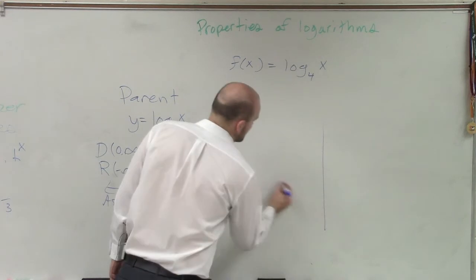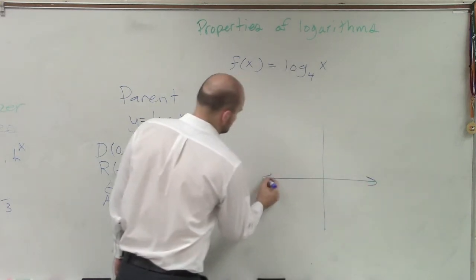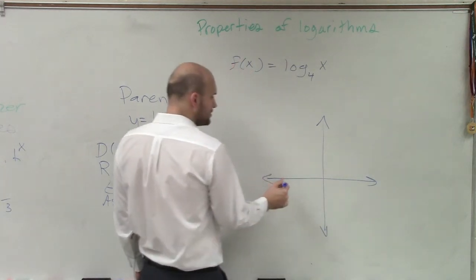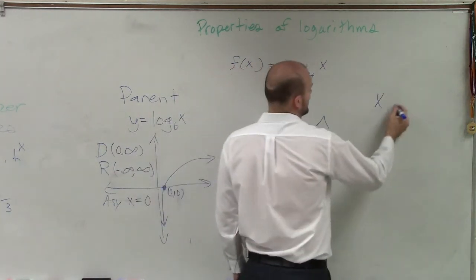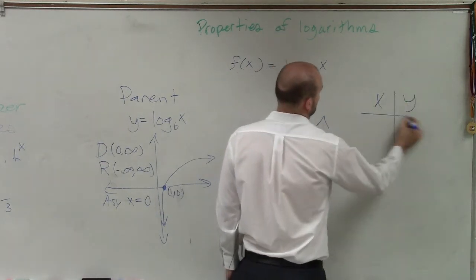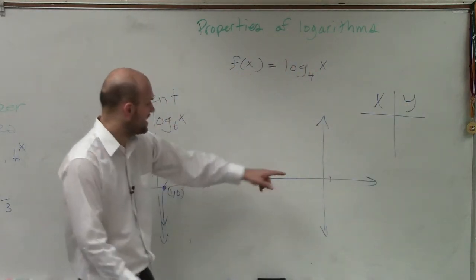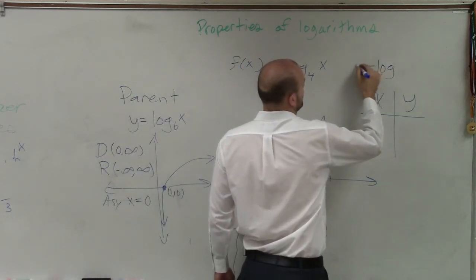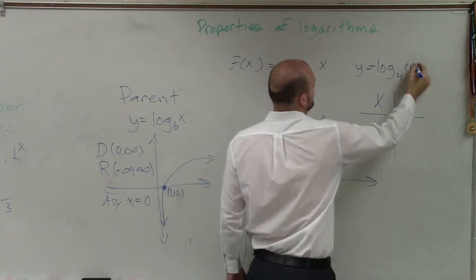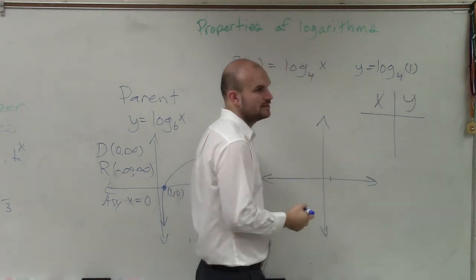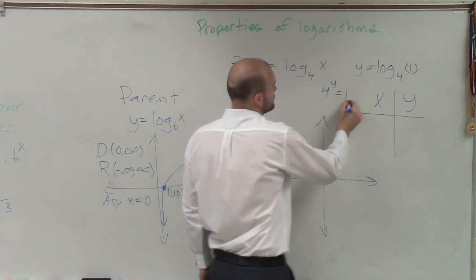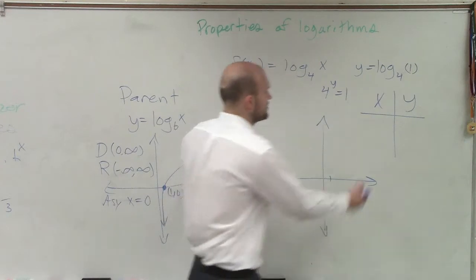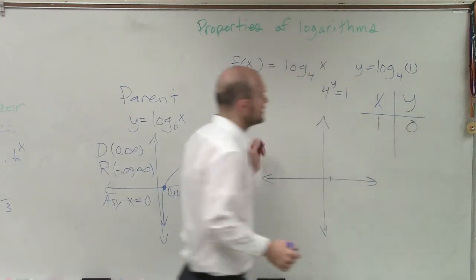So what we can do is we can just take a look at using a table. But the one thing we know is that since there's no transformations, we know that we have a y-intercept at 1. Let's do an xy table. And we say that we know that's going to have 1. y equals log base 4 of 1. If I plug in a 1, that means 4 to the y equals 1. What does y have to be? 0. That's why you know 1 is x and 0.